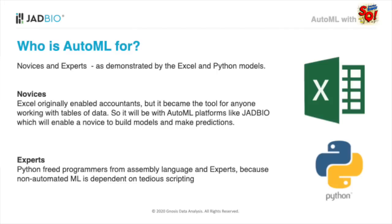Programmers used to program in assembly language decades ago. Now they program in Python, which is much more automatic. Programmers benefited from automated, higher-level programming languages. I think it's the same thing with Auto ML. Instead of scripting all the details of an analysis, experts can now automate many parts of it and focus on other aspects, like data representation and results interpretation.